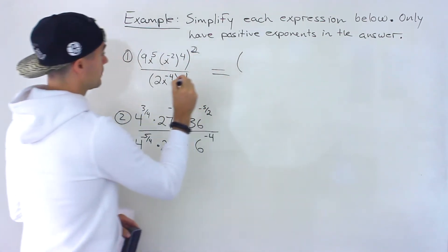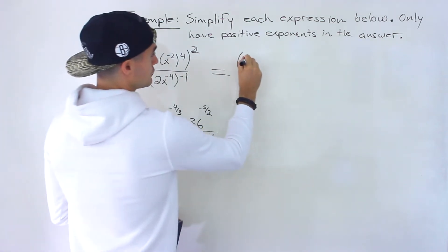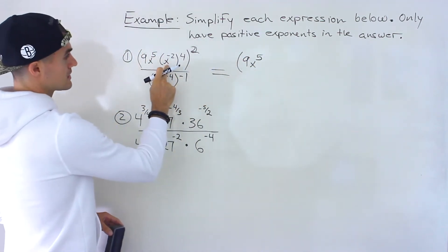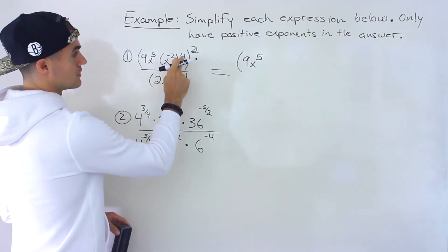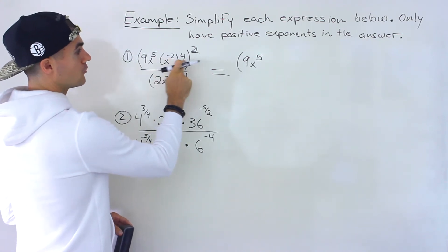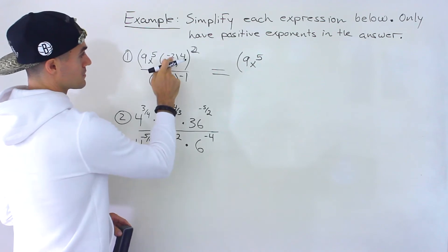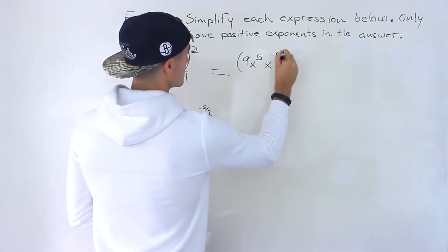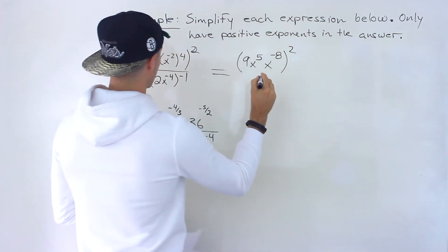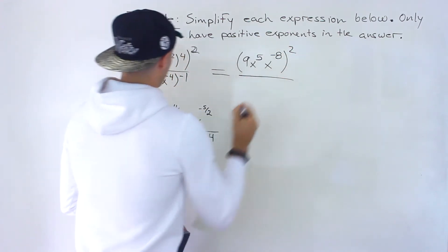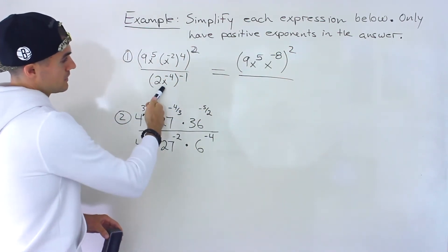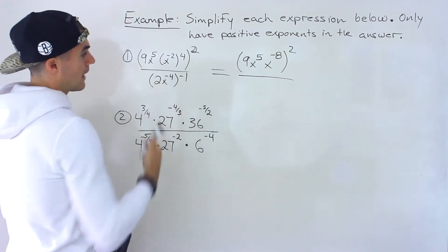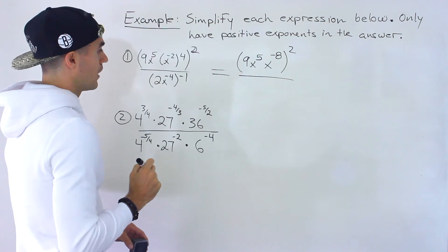So I'm going to keep that big bracket. 9x to the 5, we can't really simplify that any further. But notice here we've got x to the negative 2 to the power of 4, so we can multiply both of those exponents. Negative 2 times 4 gives us negative 8, and that's still going to be all to the power of 2. Then over here we have 2x to the negative 4, all to the power of negative 1.